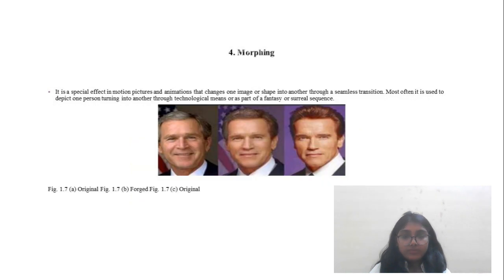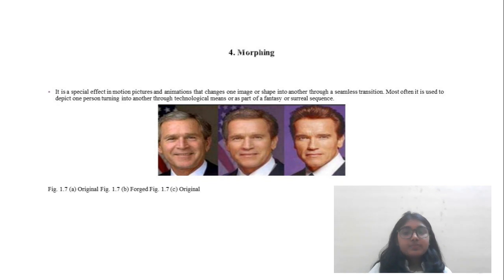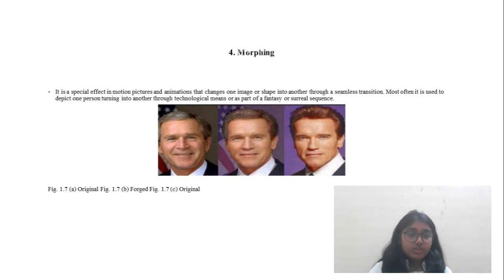Morphing is a special effect which changes the image or shape so that it looks like a seamless transition. You can see in Figure 1.7 that A and C are the original pictures, and 1.7B is a combination of both.